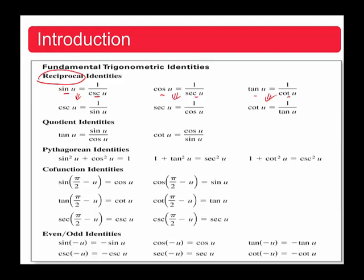To put it simply: sine u times cosecant u must equal one; cosine u times secant u must equal one; and tangent u times cotangent u must equal one. That's the best way to categorize those reciprocal identities.